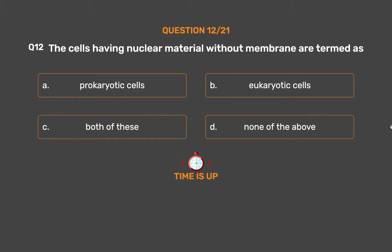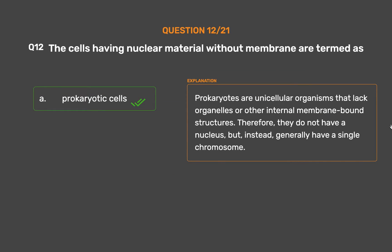The correct answer is Option A: Prokaryotic cells. Prokaryotes are unicellular organisms that lack organelles or other internal membrane-bound structures. Therefore, they do not have a nucleus but instead generally have a single chromosome.